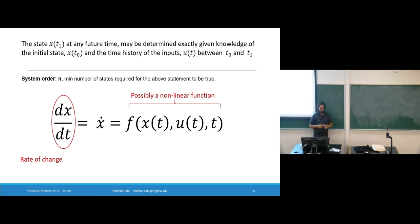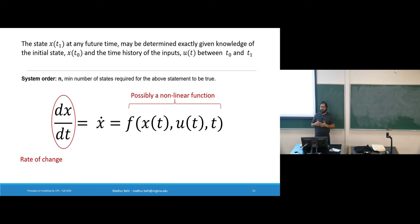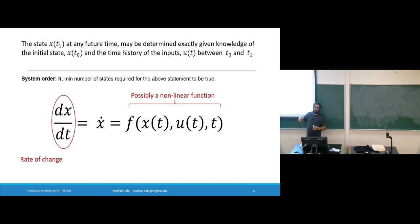Here is an important distinction. The order of a differential equation is the highest degree of derivative in the equation. The order of a system — in particular a dynamical system — is the minimum number of states required for the prediction statement to be true. It could be infinite states, but every system also has a system order, which says what is the minimum set of states needed. This becomes relevant when we discuss the next part of systems theory.